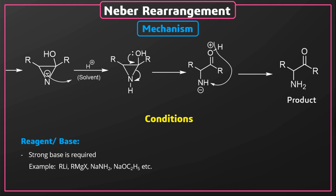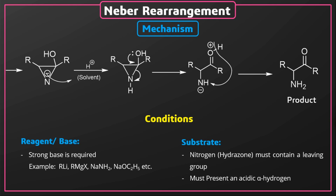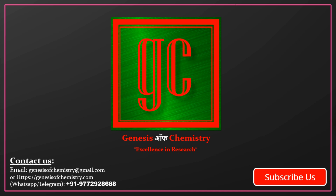Examples of suitable strong bases include alkyl lithium, sodium amide, and sodium ethoxide. The substrate molecule must have a good leaving group, and the molecule must have one alpha hydrogen.